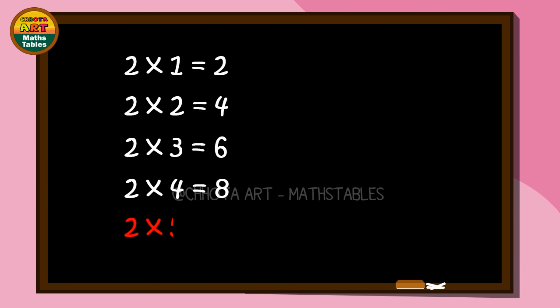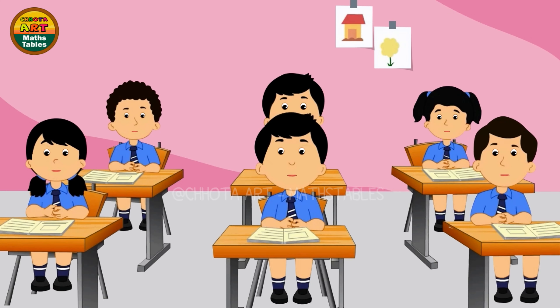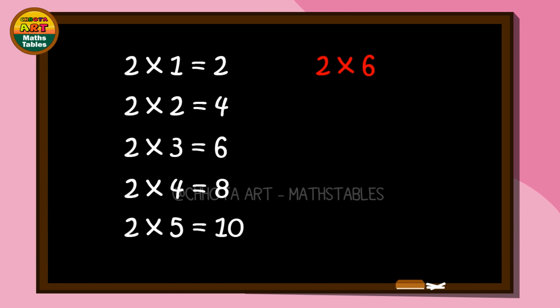Two fives are ten, two fives are ten. Two sixes are twelve, two sixes are twelve. Two sevens are fourteen, two sevens are fourteen.